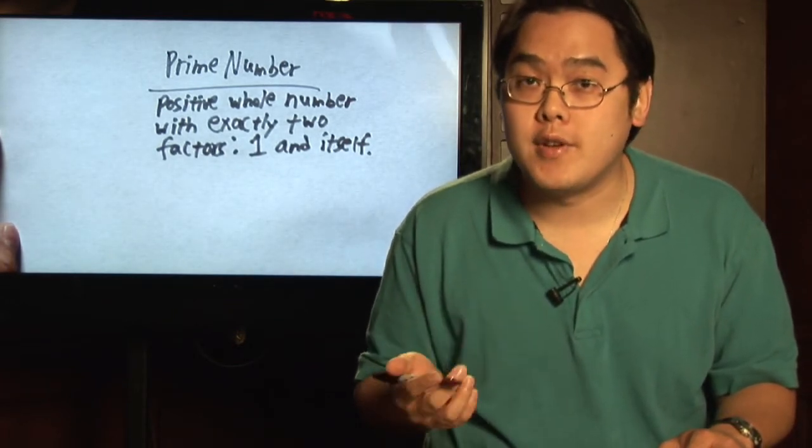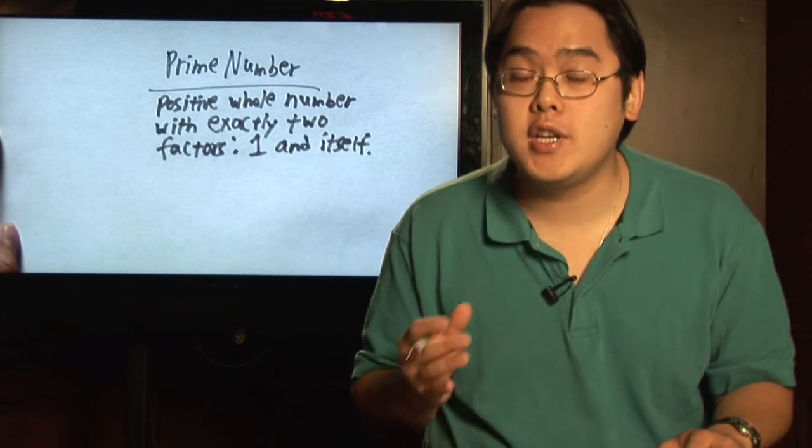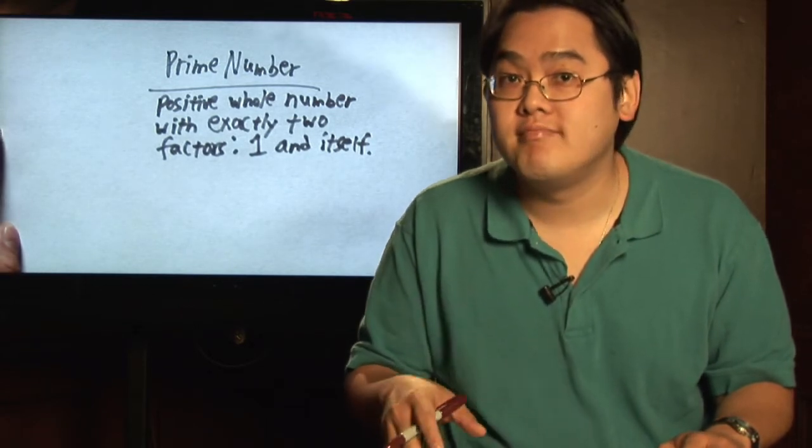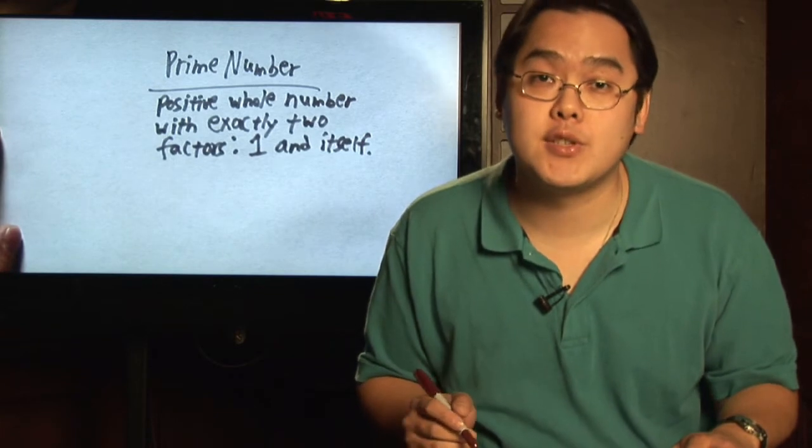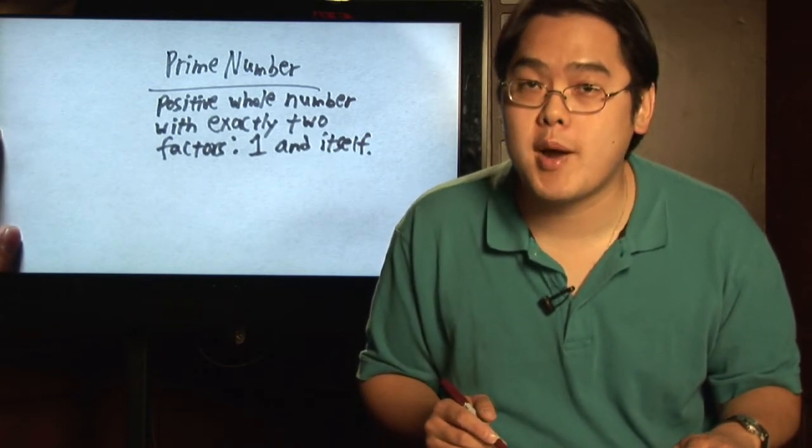In other words, a number is prime if the only numbers that go into it are one and the number itself. Here are a few examples of what are prime numbers and what are not.